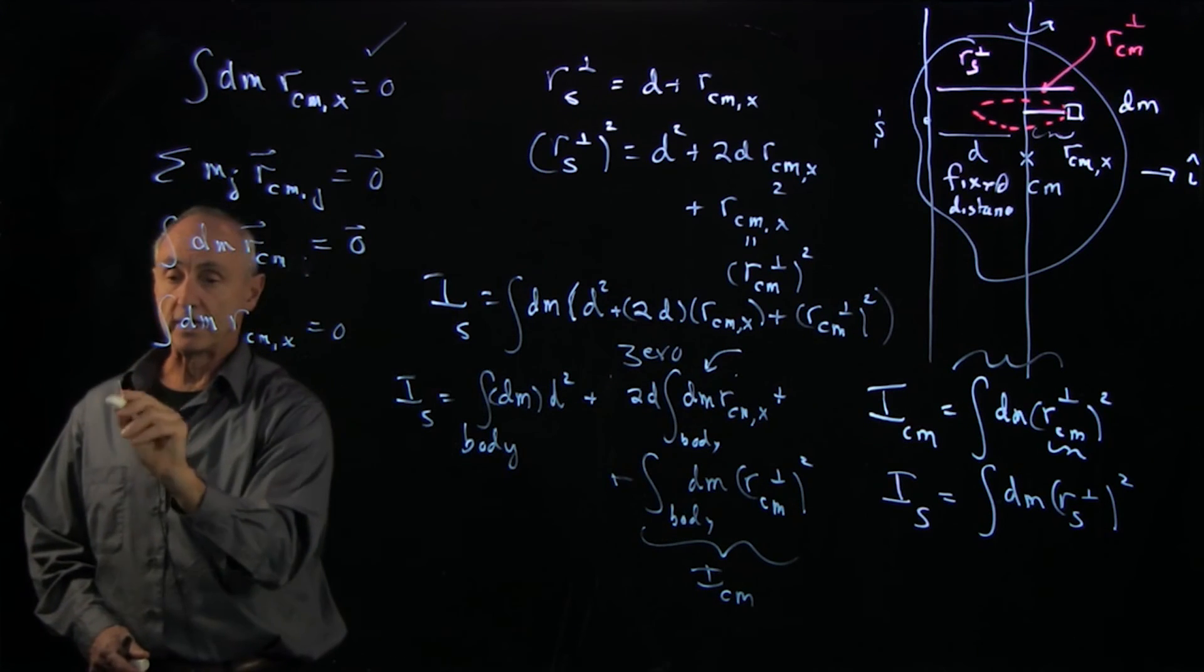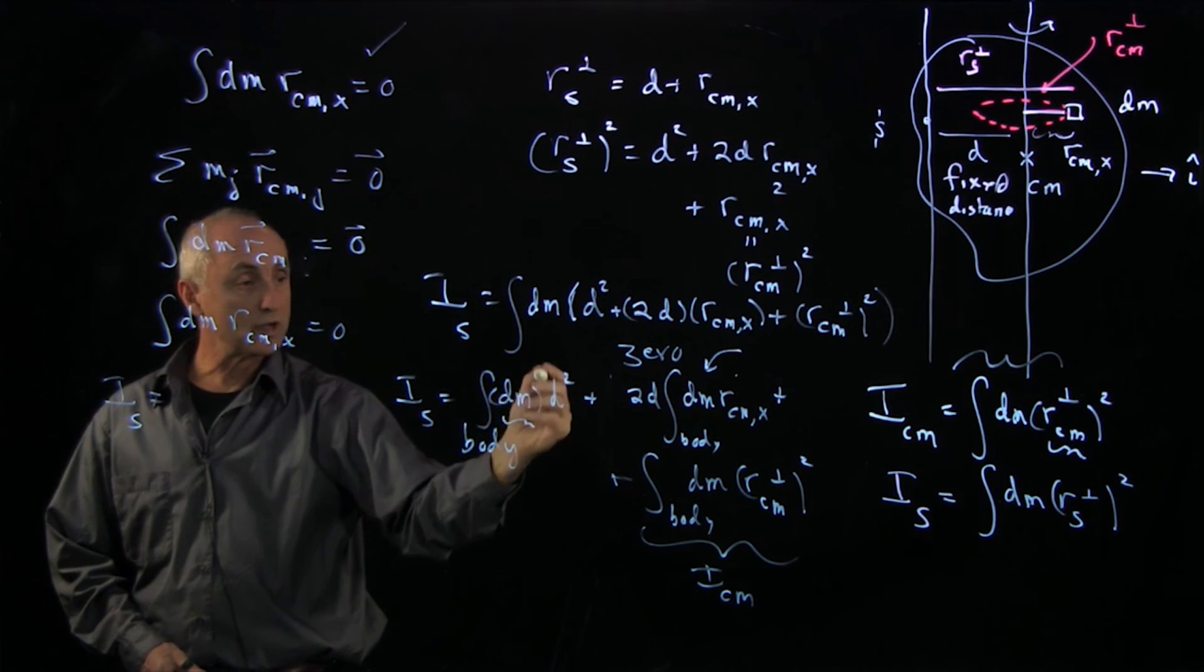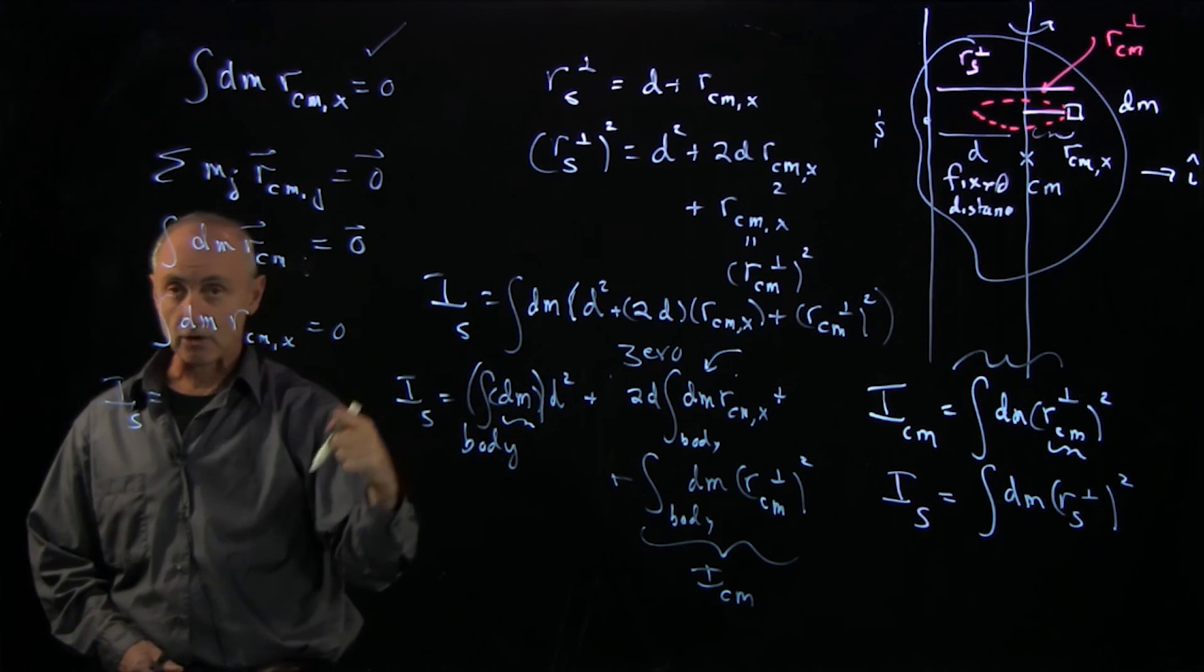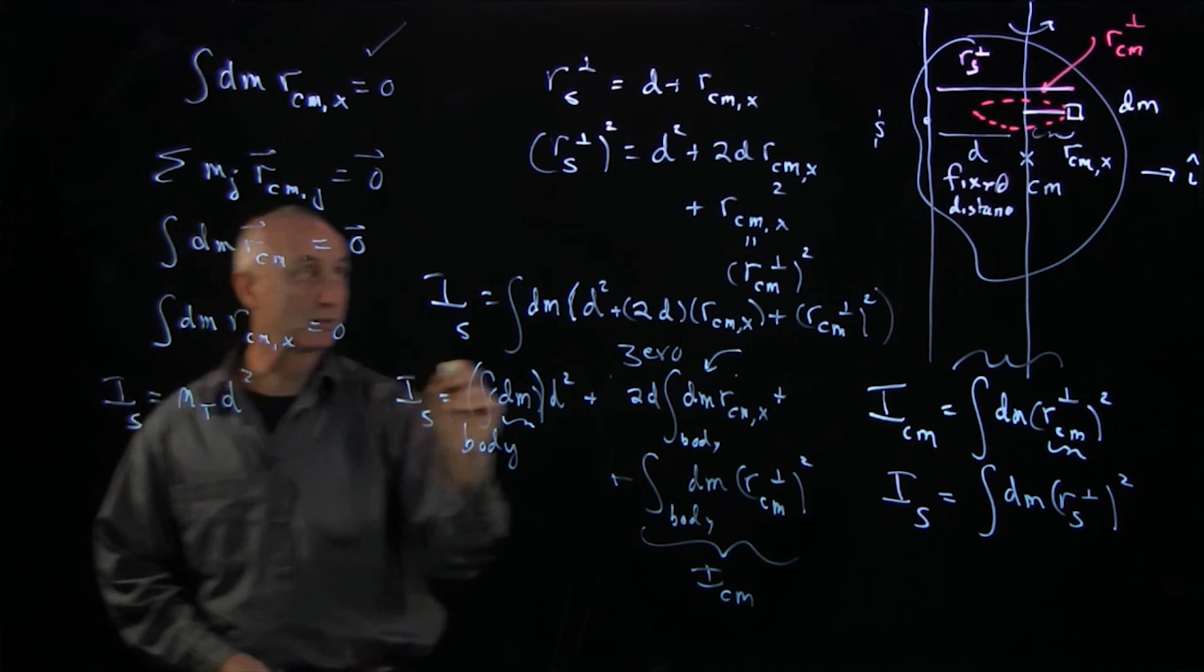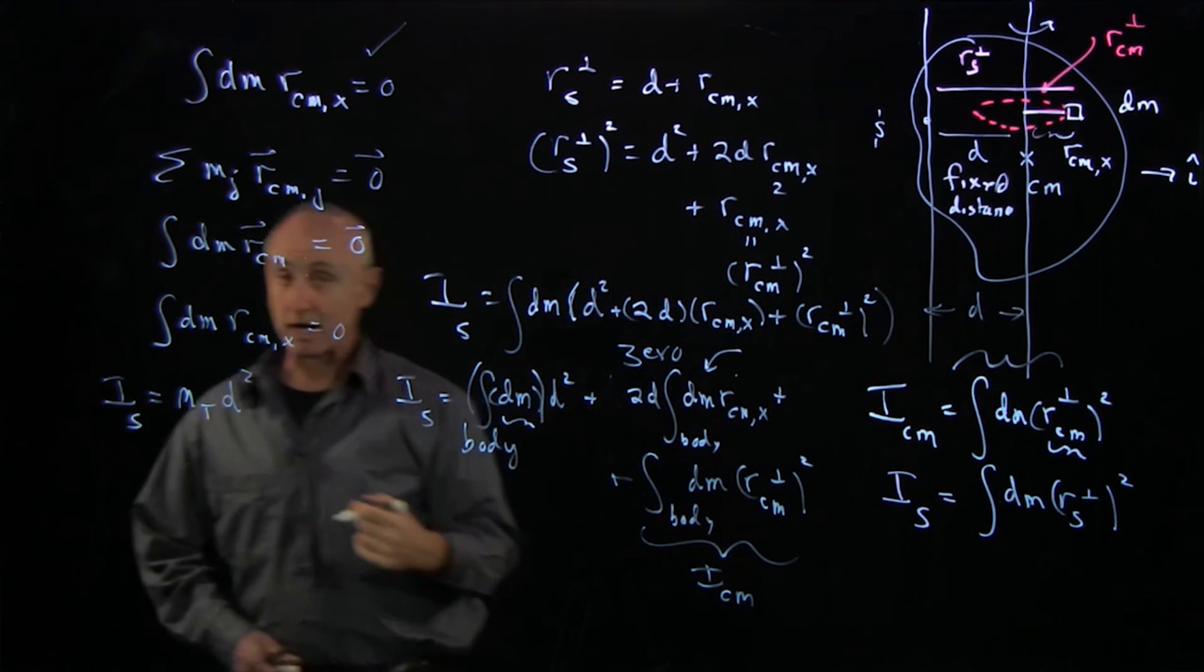And so we can conclude that is. Now, in this term, d is the same piece for every object. So we're just pulling out the total mass. So it's m_total d squared. And let's remind ourselves that d is the distance between the two parallel axes.